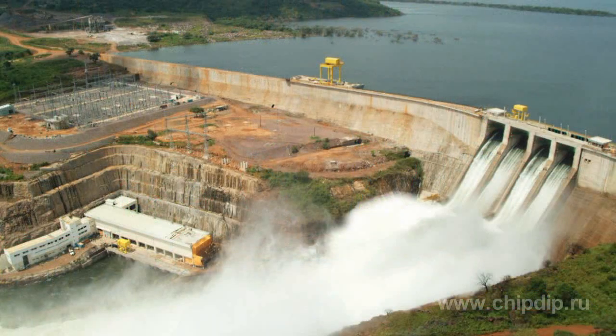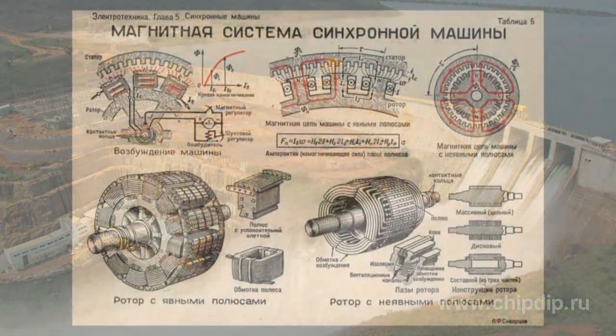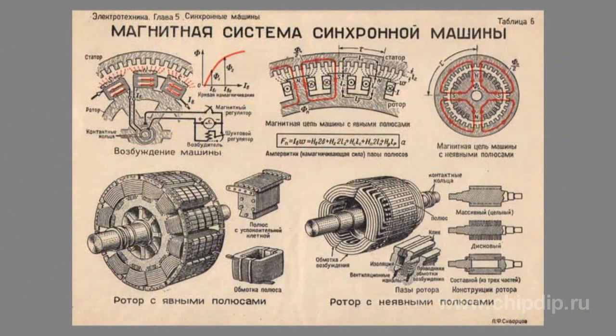A hydrogenerator is an electric generator operated by a hydroturbine. Usually, a hydrogenerator is a salient pole synchronous generator with a rotor connected with the working wheel shaft of the hydroturbine.